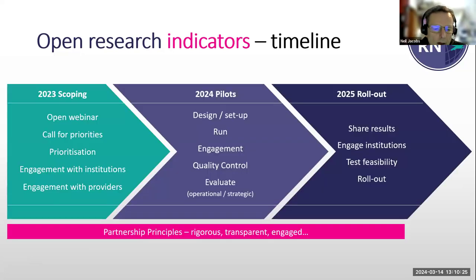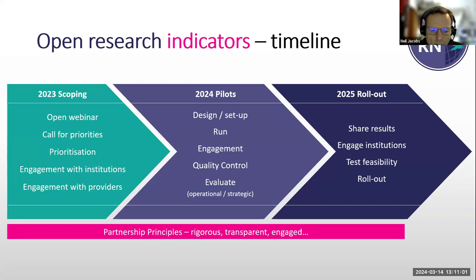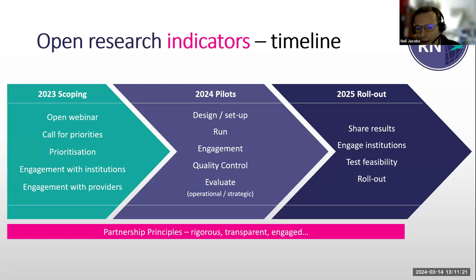Last year we spent a lot of time scoping the work. We had a webinar pretty much exactly a year ago today. We put out a call for priorities asking the sector what aspects of open research they want to monitor. From that we got together a group of institutions interested in participating. We've worked across those institutions and engaged with a range of service providers and data providers to establish an informal consortium of people interested in improving practice in this area. This year we're designing and setting up this set of pilot projects.